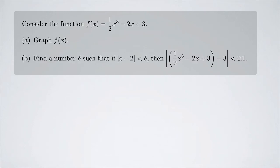Consider the function f(x) = (1/2)x³ - 2x + 3. Part A says to graph f(x), and part B says to find a number delta such that if |x - 2| < delta, then |(1/2)x³ - 2x + 3 - 3| < 0.1.